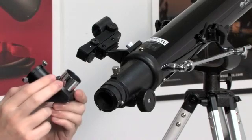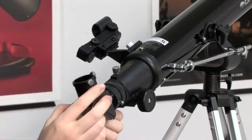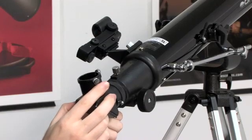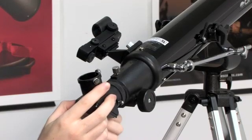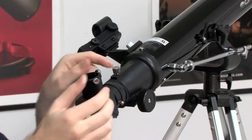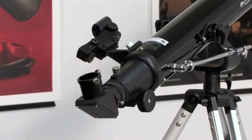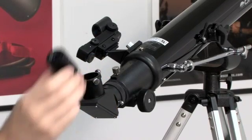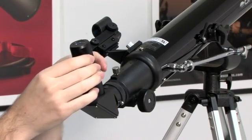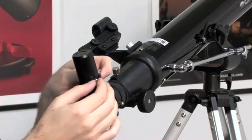Now insert the chrome barrel of the mirror star diagonal into the focuser draw tube and securely fasten it with the thumbscrews. Loosen the thumbscrews on the mirror star diagonal and insert the 25 millimeter eyepiece, and securely fasten it again with those thumbscrews.